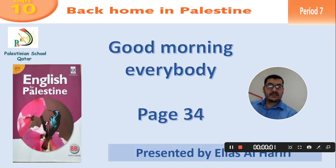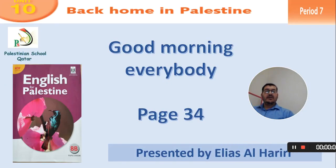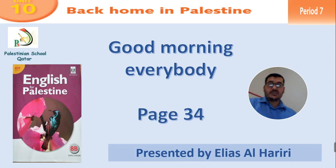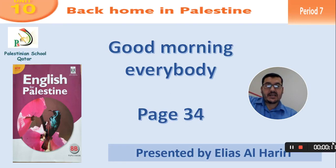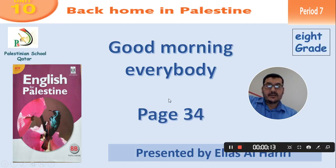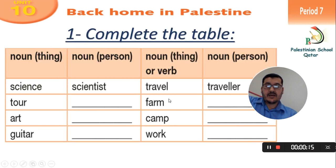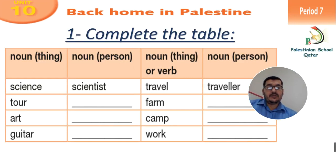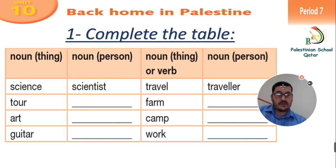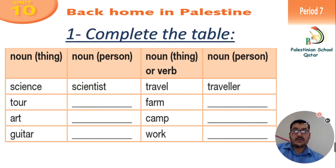Good morning everybody. This is Elias al-Hariri. Our English class, page 34 today, Unit 10, Back Home in Palestine, Grade 8. At the beginning, everybody, we need to complete the table according to noun person and noun thing. Here we have noun of thing: science, and noun person: scientist.